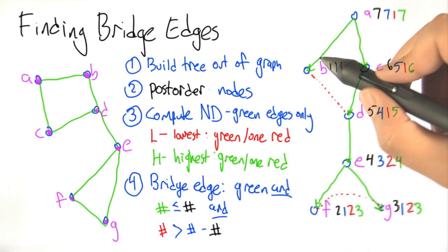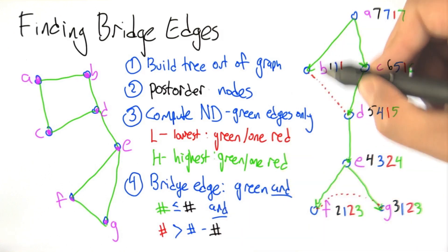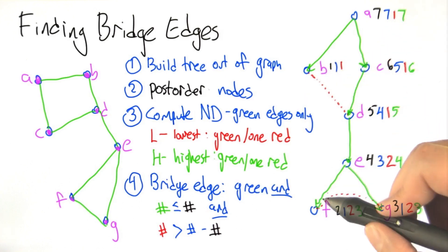So what we're doing here is we're looking at each green edge and we're checking the numbers on the downward part of the edge. So here's a green edge and let's look at the numbers here and see if they fit the pattern. We need the green number to be less than or equal to the black number. So that doesn't work.